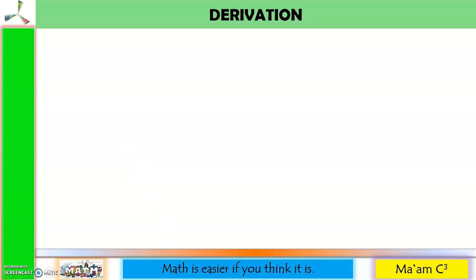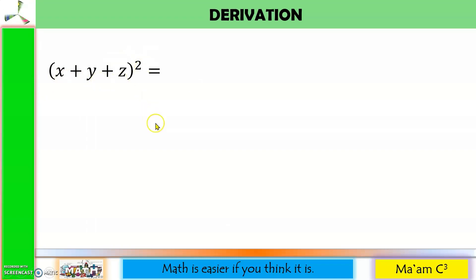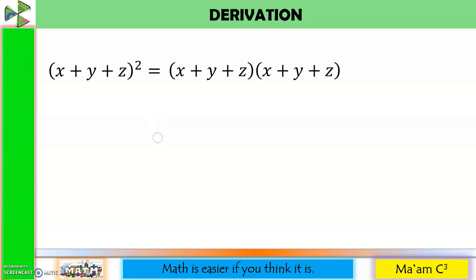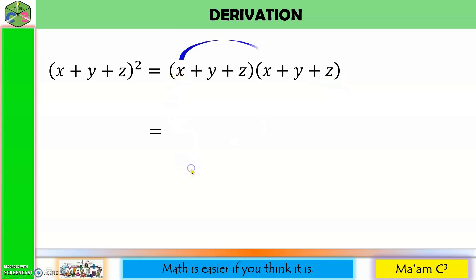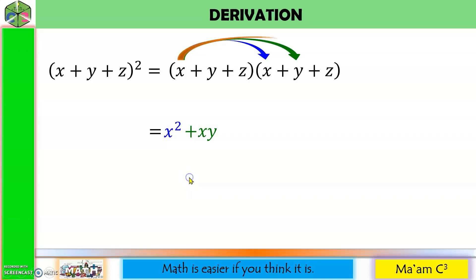What if we have a square of a trinomial? Quantity x plus y plus z squared is equal to quantity x plus y plus z multiplied two times. All we have to do is to distribute each term here to the terms here. Let us distribute x: x times x is x squared, x times y is xy, x times z is xz.